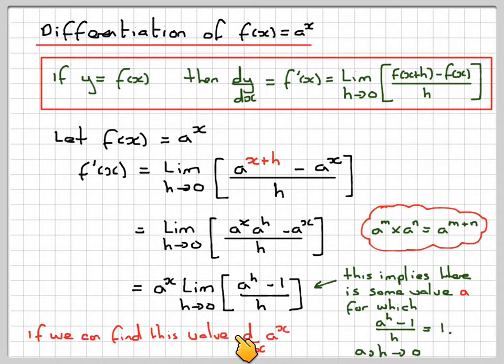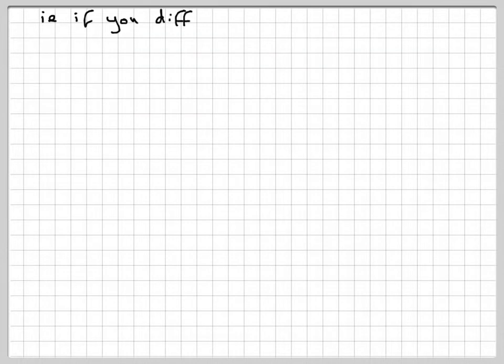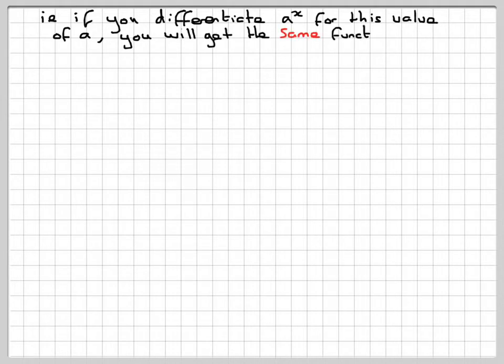If we can find this value, then d dx of a to the x will be itself a to the x. So what we're saying is, if we can find a value of a so that when we work this limit out it's 1, if we differentiate the original function, we get itself. So if you differentiate a to the x for this particular value of a, you will get the same function. Now let's have a look at this graphically.